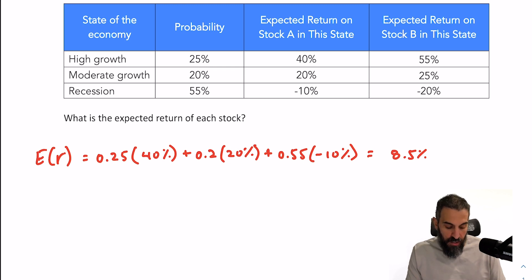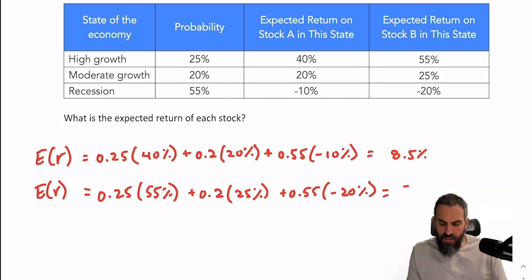For stock B, we'll do exactly the same thing. A 25% probability of earning 55%, a 20% probability of earning 25%, and a 55% probability of losing 20%. And that works out to be 7.8%.